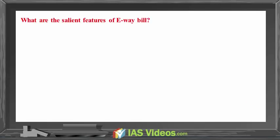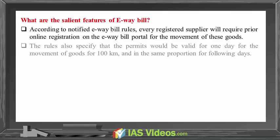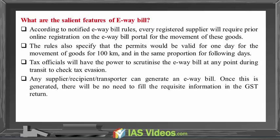What are the salient features of the E-Way Bill? According to notified E-Way Bill rules, every registered supplier will require prior online registration on the E-Way Bill portal for the movement of goods. The rules also specify that permits would be valid for one day for movement of goods up to 100 km, and in the same proportion for following days. Tax officials will have the power to scrutinize the E-Way Bill at any point during transit to check tax evasion. Any supplier, recipient, or transporter can generate an E-Way Bill, and once generated, there will be no need to fill the requisite information in the GST return.